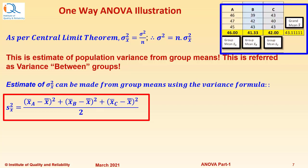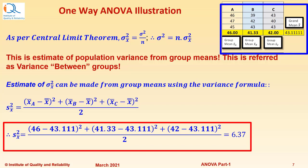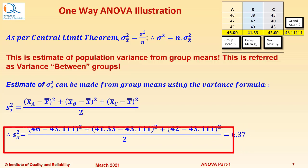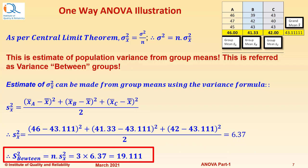From the data, we can calculate the grand mean x-bar as 43.1111, the group mean of A as 46.00, B as 41.33, and C as 42.00. Using this, we calculate S-x-bar squared as 6.37. We then multiply by sample size n to estimate variance between groups: S-squared-between equals n times S-x-bar-squared, that is 3 times 6.37, which works out to 19.111. This is one estimate of variance from the group means.